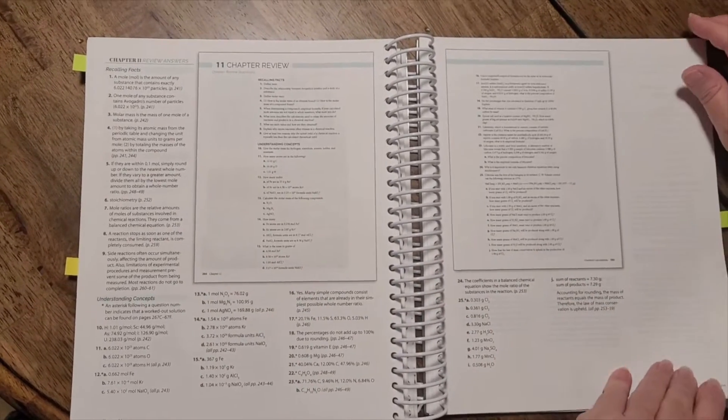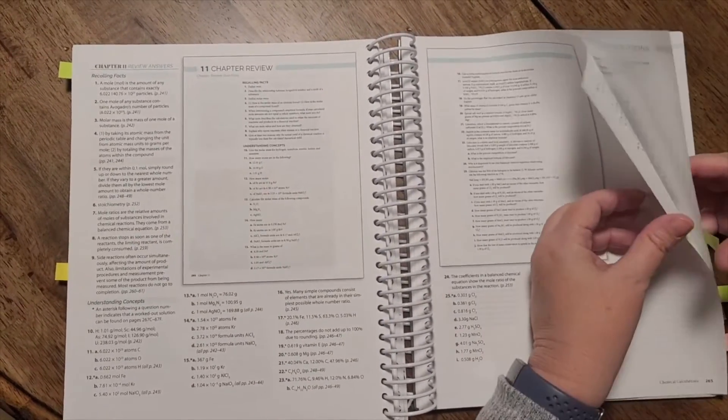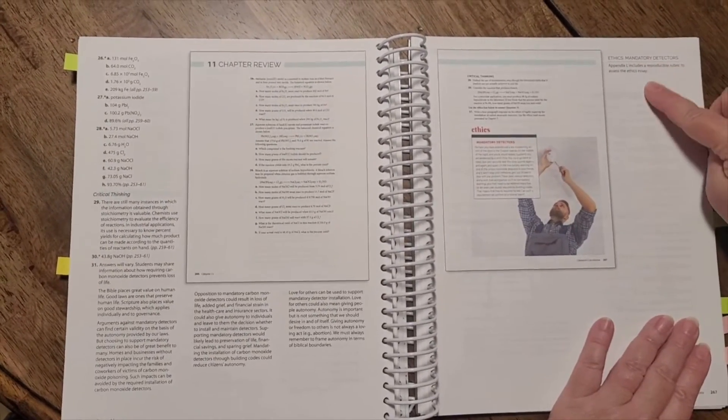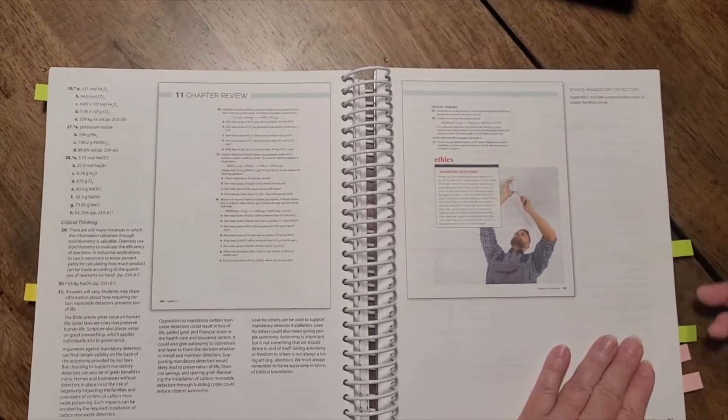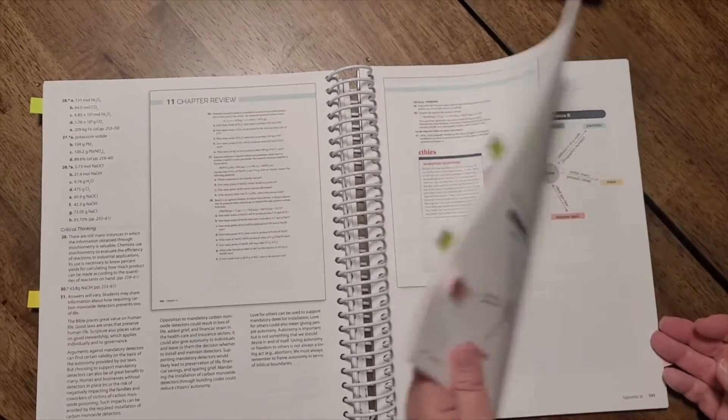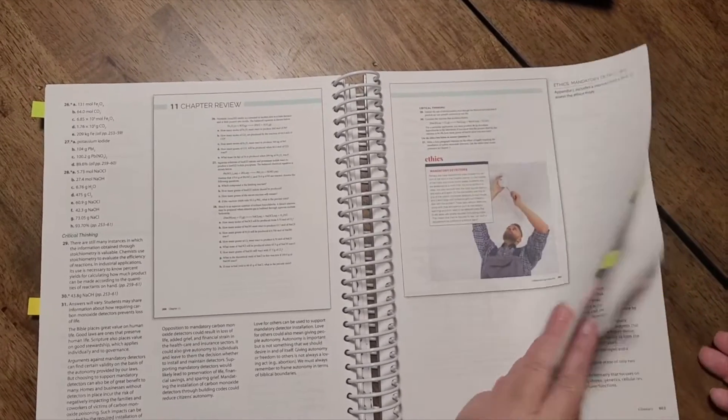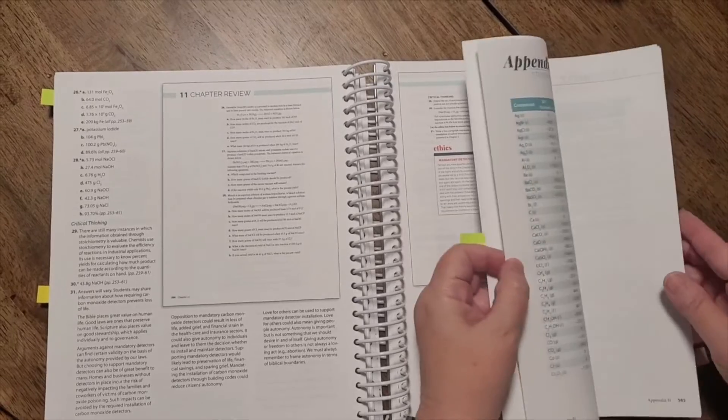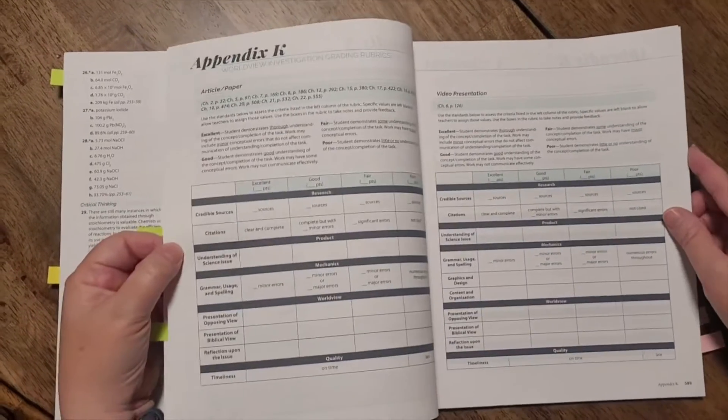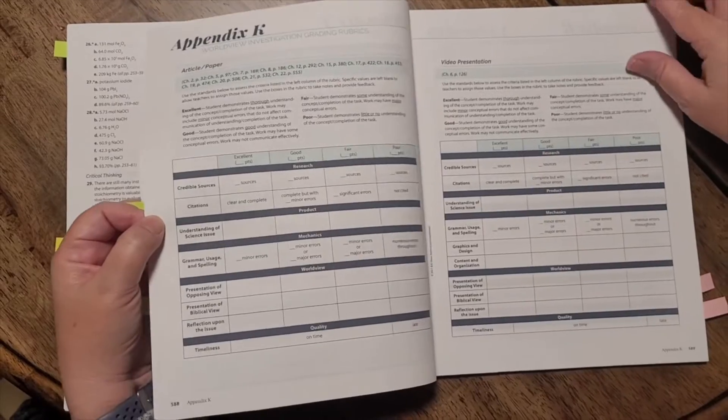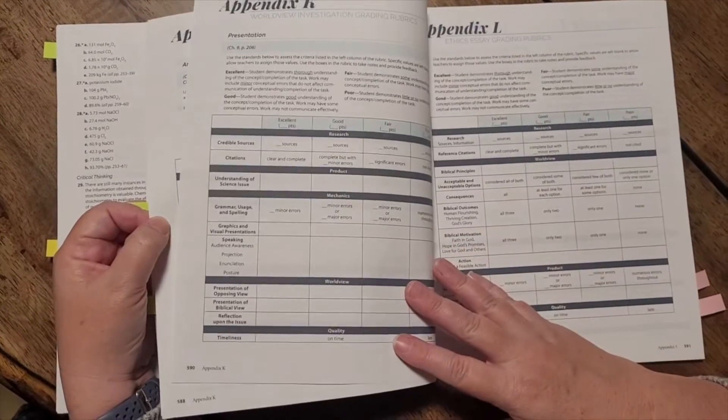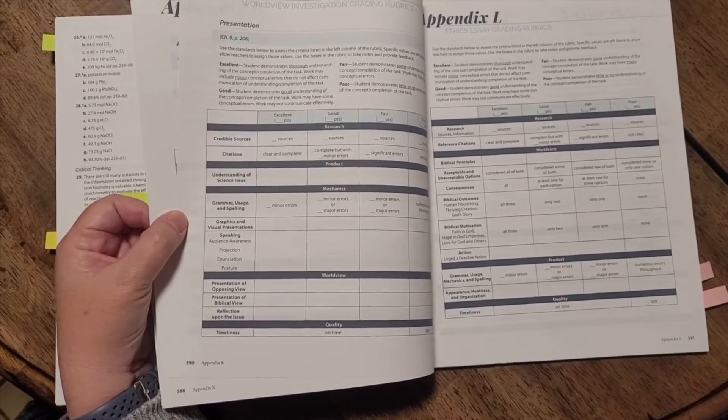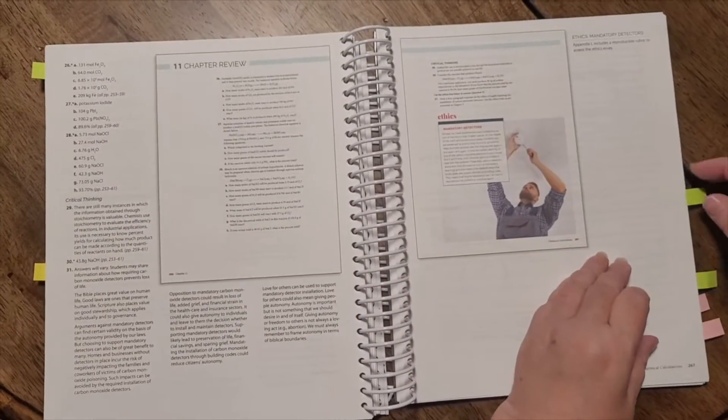Each chapter has a chapter review for the student. And then at the end, there is the ethics. And you have a rubric here in the back of the appendix that goes over what you're looking for with the ethics. So article, paper, video. There's your specific rubric for those. Here's the ethics essay grading rubric as we go.